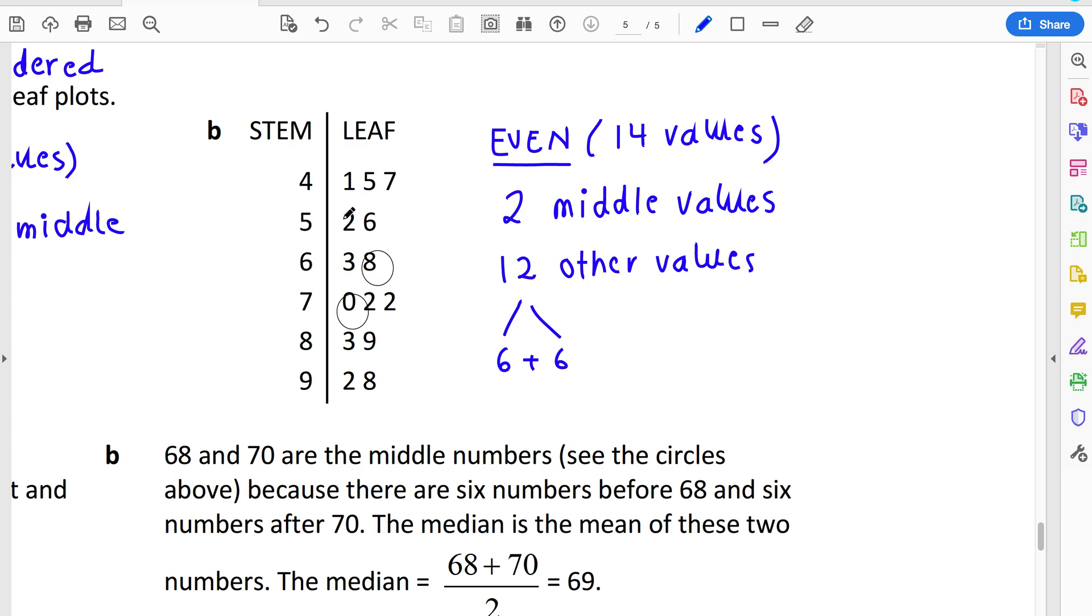So if we count one, two, three, four, five, six this way, and one, two, three, four, five, six this way, you can see your two that are in the middle. In this one, it's 68 and 70.